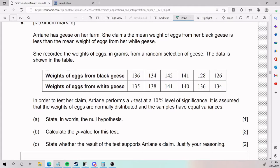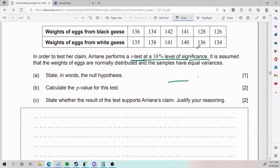Now, in order to test her claim, she performs a t-test at a 10% level of significance, and it is assumed that the weights of the eggs are normally distributed and the samples have equal variances.